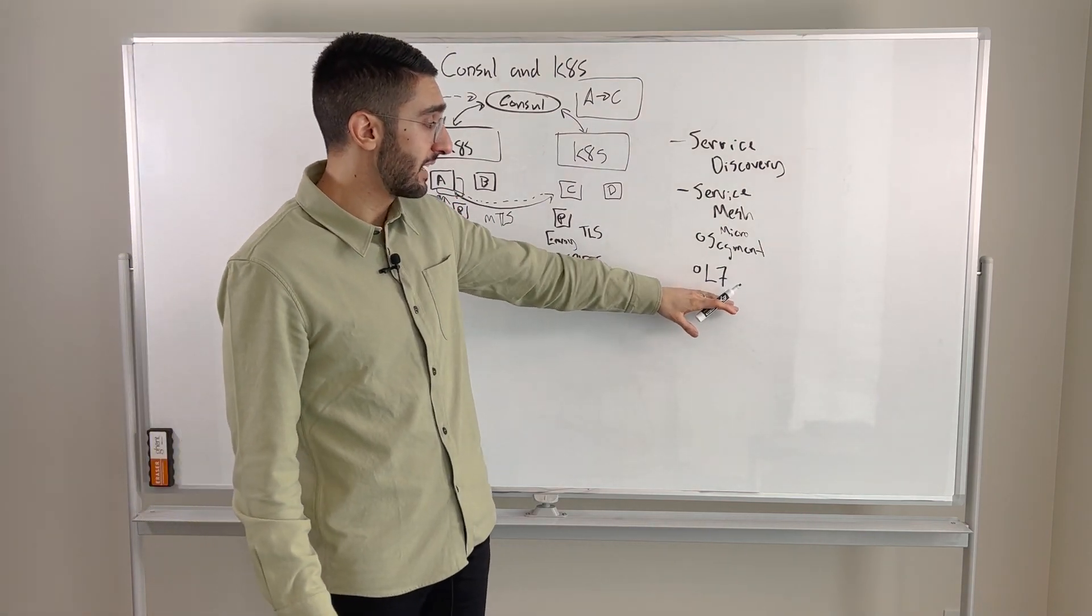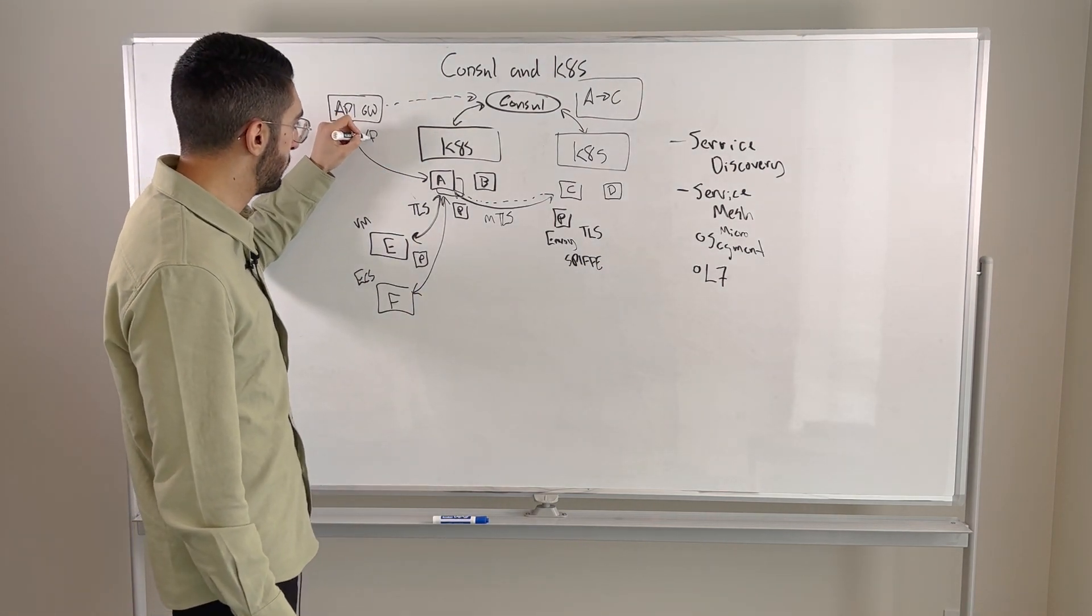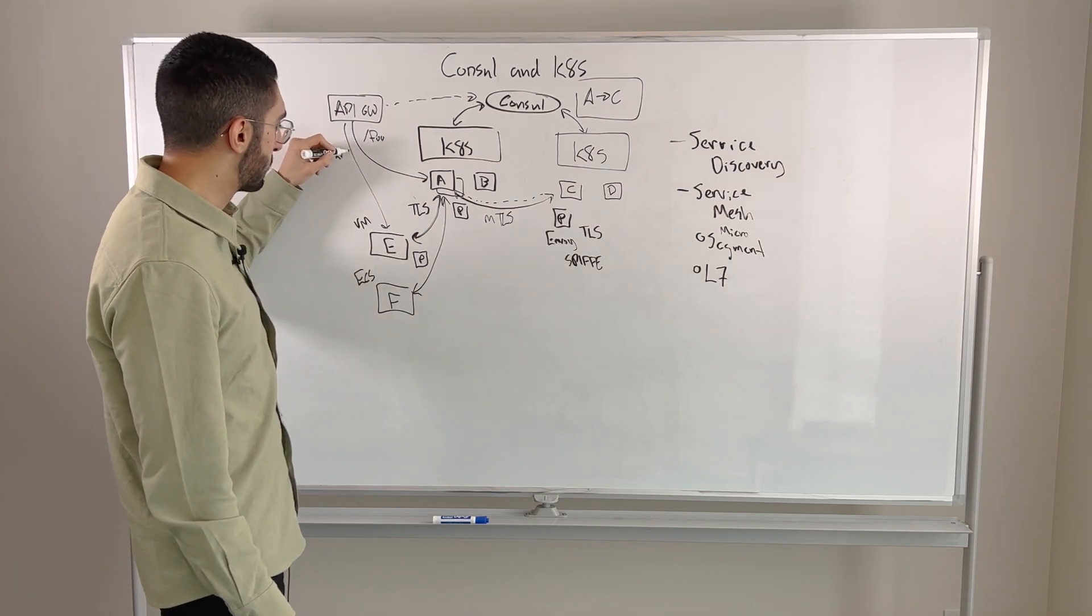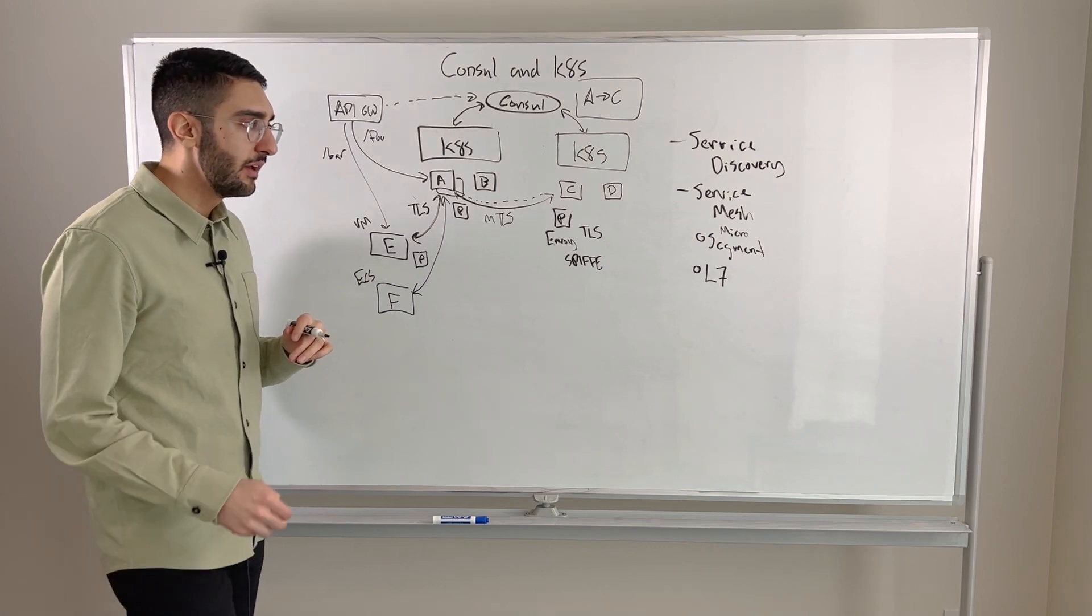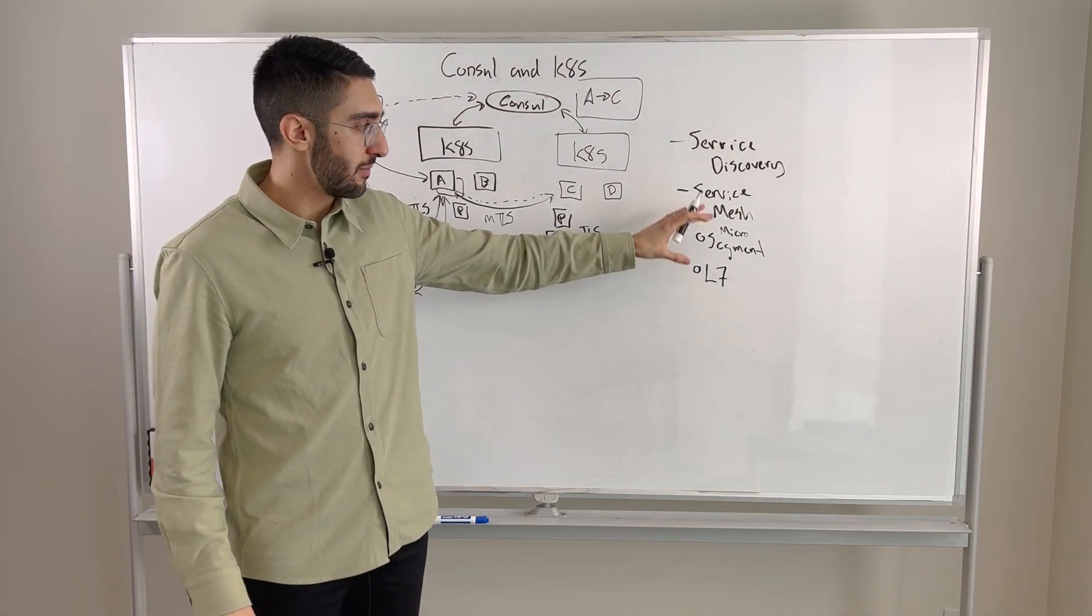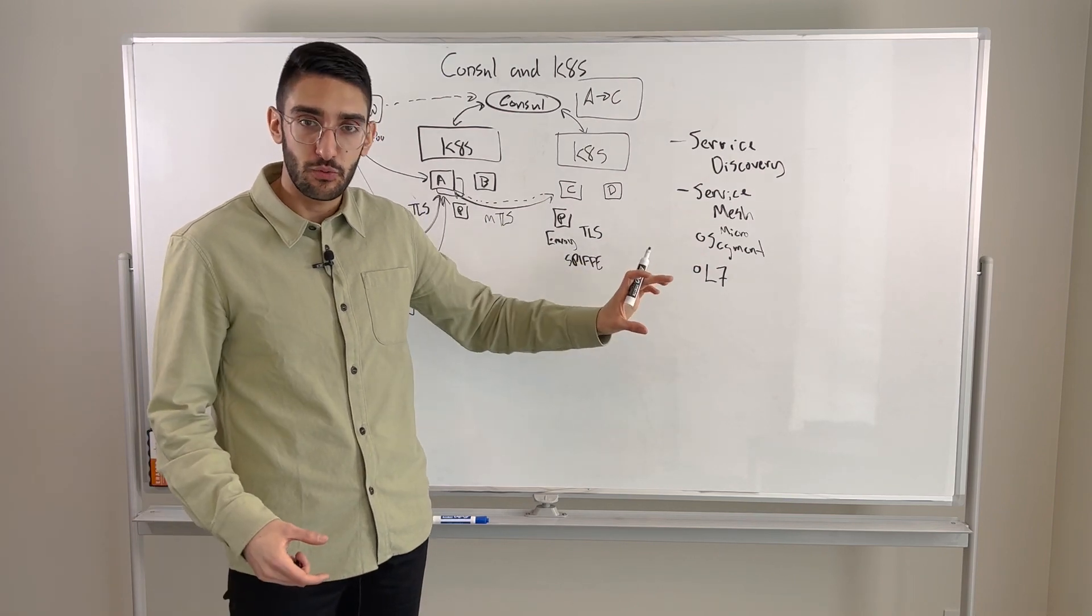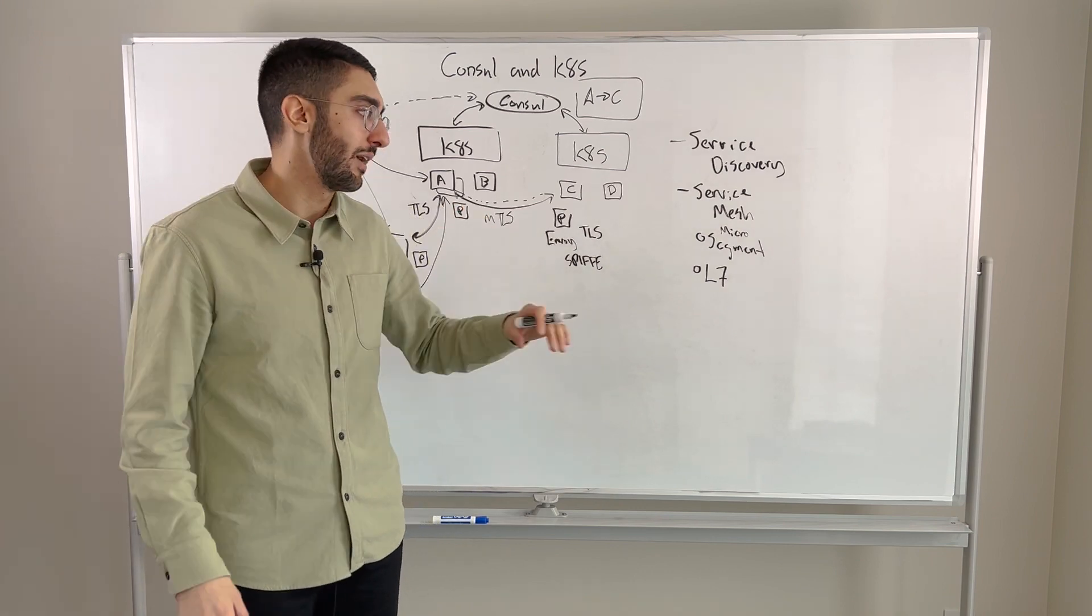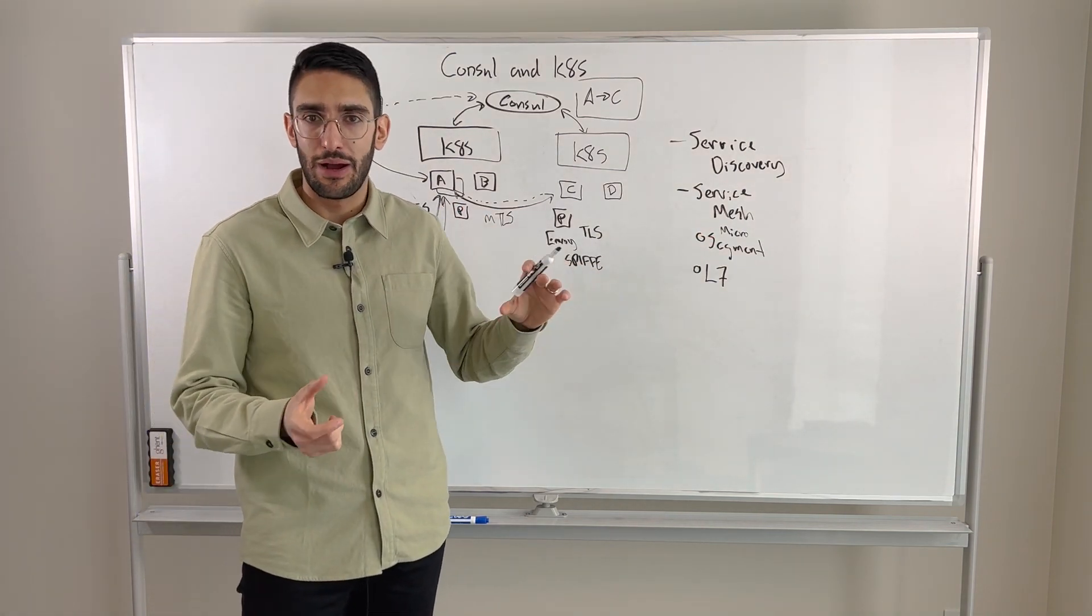We might also use layer 7 within an API gateway path to say, great, if it's slash foo, that goes to service A, but if it's slash bar, that might go to our traditional VM-based service, in this case, service E. So we can start integrating with service mesh some of these level 7 constructs, such as path-based routing, more sophisticated policy at that protocol-aware layer to start doing more interesting things around traffic management, routing, etc.